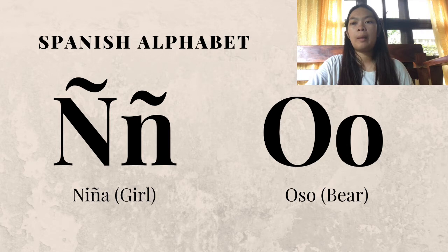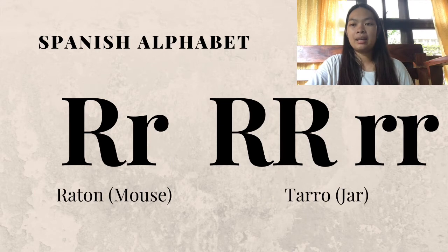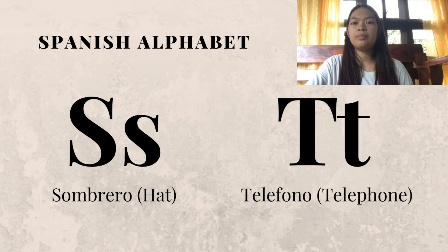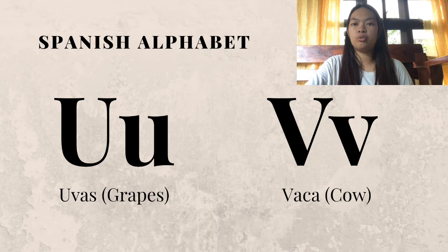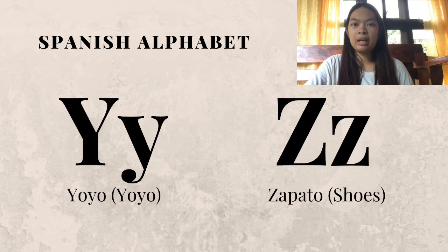P — Pan. Q — Queso. R — Raton. RR — Toro. S — Sombrero. T — Telefono. U — Uvas. V — Vaca. W — Kiwi. X — Telefono. Y — Yoyo. Z — Zapato.